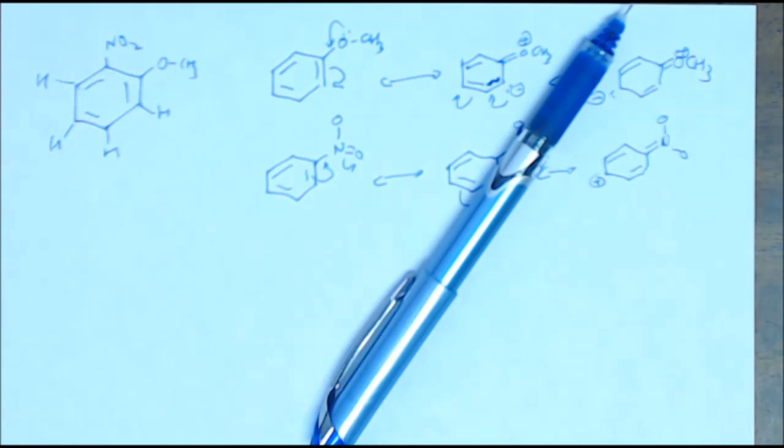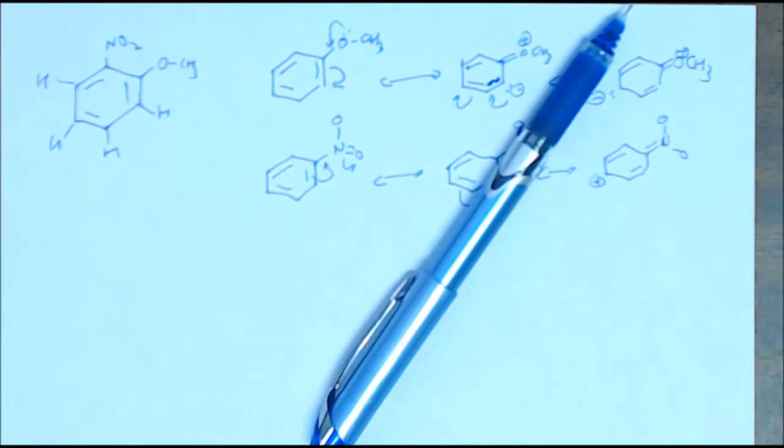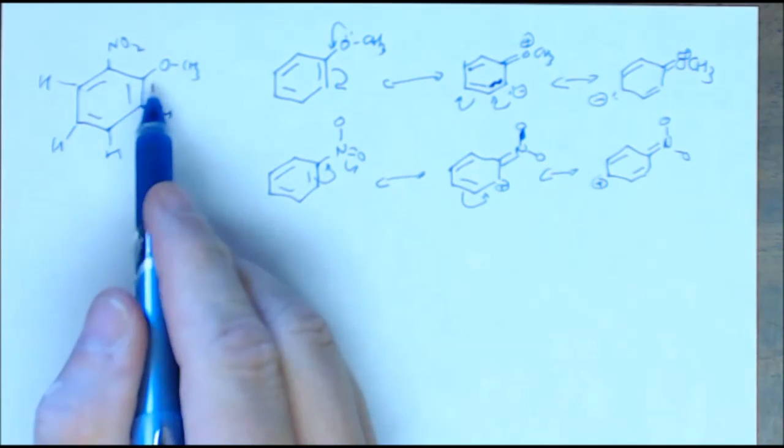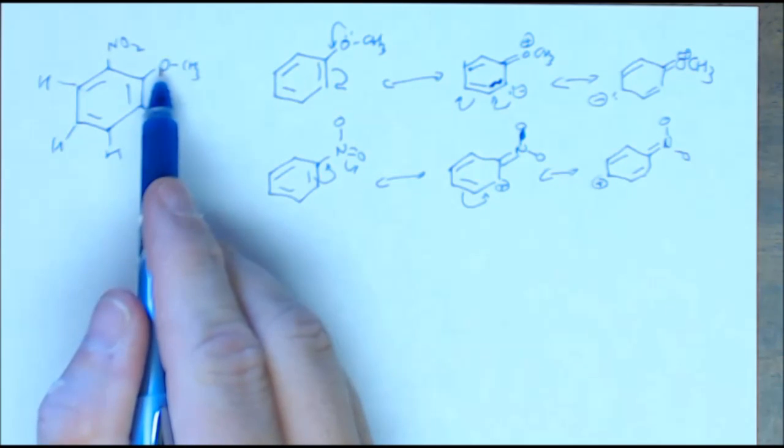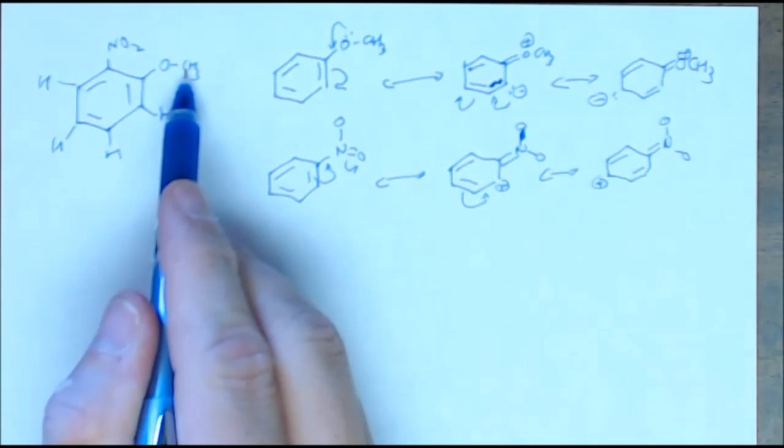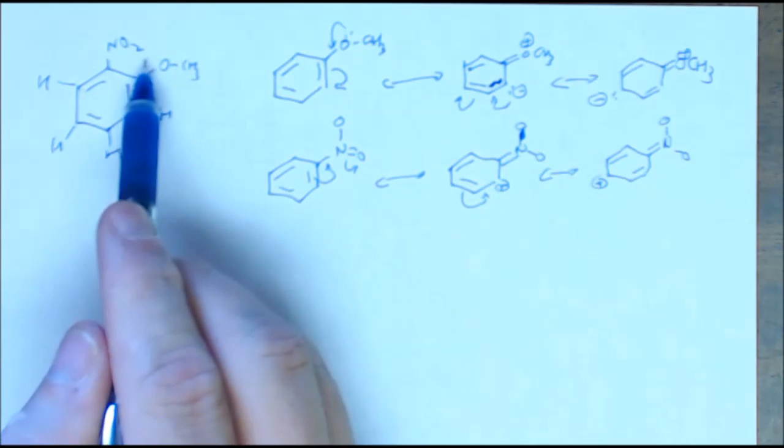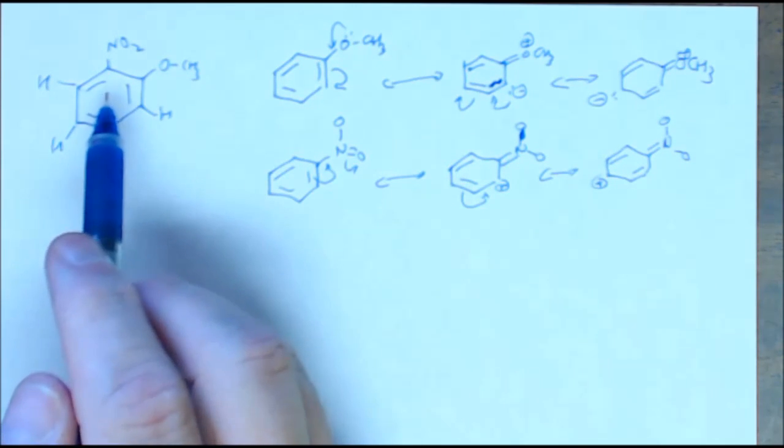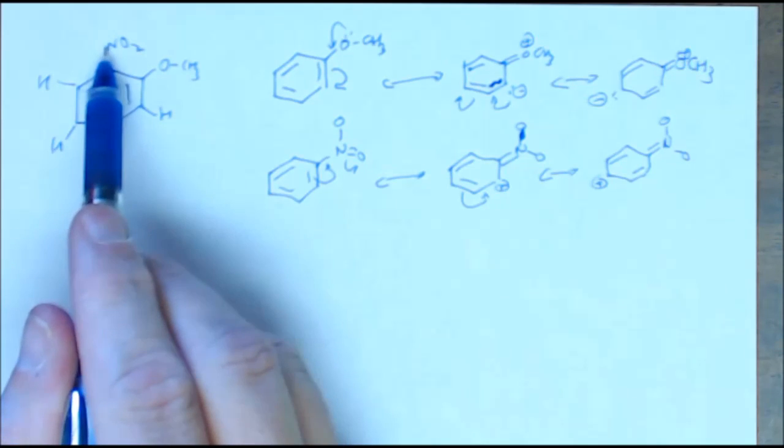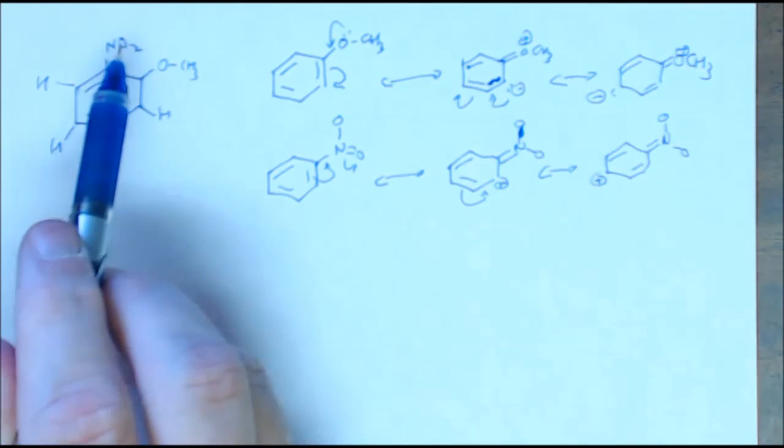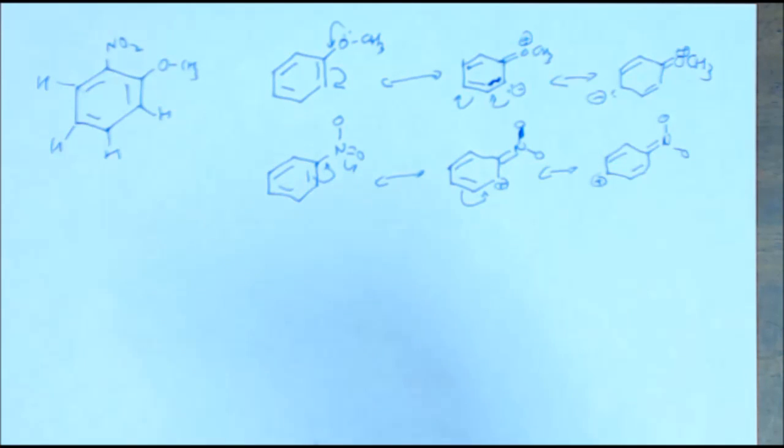Now what we were talking about before we were so rudely interrupted is an example involving an OCH3, a methoxy group. This is called 2-nitro-anisol. So if I have an OCH3 on an aromatic ring, it's called anisol. And I've got a nitro in the ortho position to the OCH3. And I want to illustrate how to predict what the NMR spectra is going to look like, including coupling, splitting, and the chemical shift of these compounds, the hydrogens, on this particular compound.